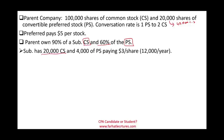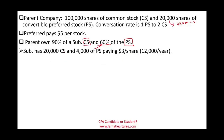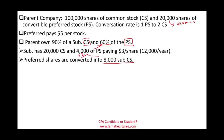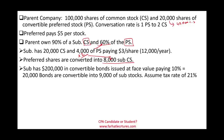The sub has 20,000 shares of common stock, of which 18,000 are owned by the parent. The sub has 4,000 shares of preferred stock, of which 60% — or 2,400 shares — is owned by the parent. The preferred stock pays $3 per share, which is $12,000 per year in preferred dividends. The preferred shares are convertible into 8,000 common shares for the sub — the same 1-to-2 conversion rate. Additionally, the sub has $200,000 in convertible bonds issued at face value paying 10%, which is $20,000 per year. Those bonds are convertible into 9,000 shares of sub stock.